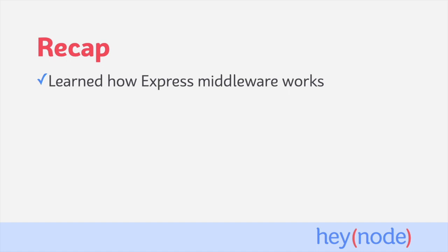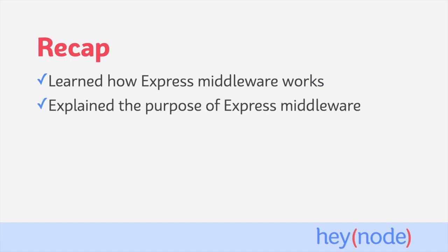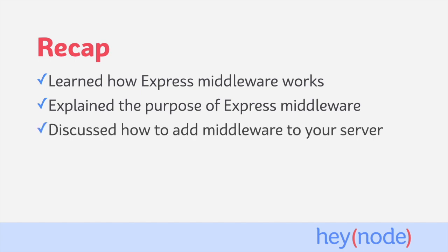To recap, in this tutorial we talked about how Express middleware works by running code during the request-response cycle. We talked about middleware's purpose in Express, which is adding functionality to your server. We also talked about adding middleware to your server and the different places that it can be registered with the application.